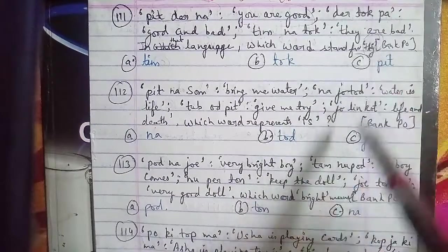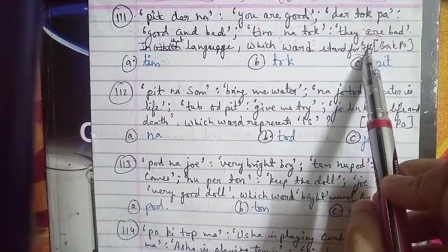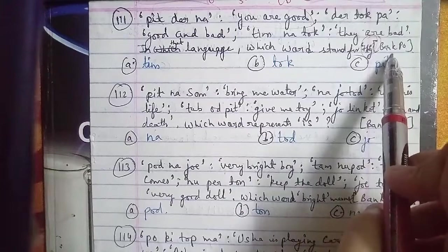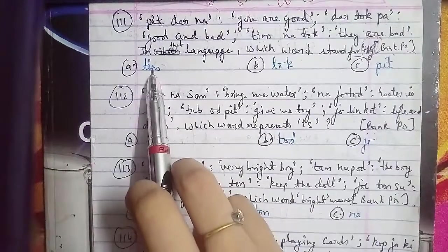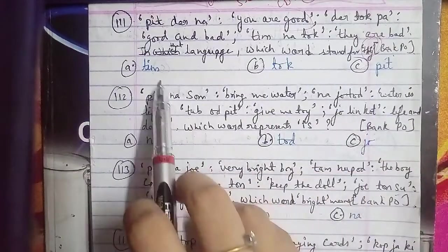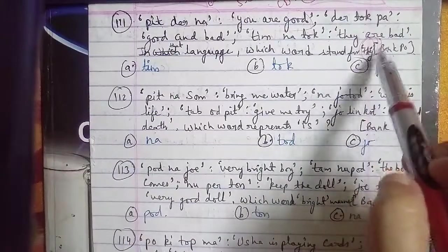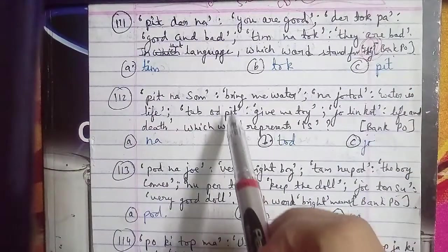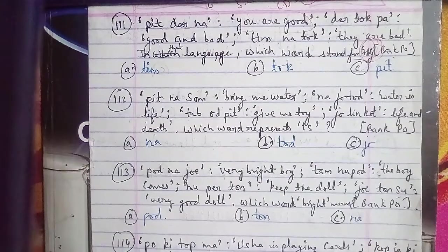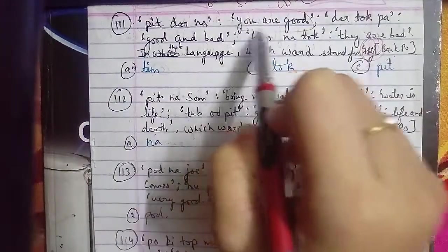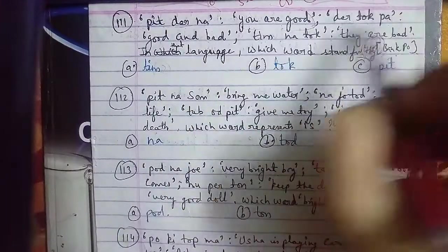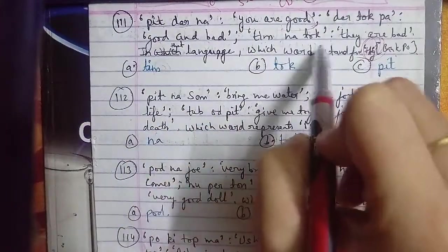For the 111th question, pit der nam is coded as 'you are good', then der tok pa is coded as 'good and bad', and tim na tok is coded as 'they are bad'. We need to find which word stands for deh. This was asked in a bank exam paper.